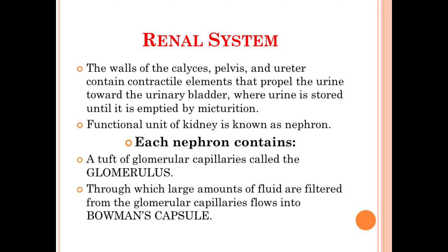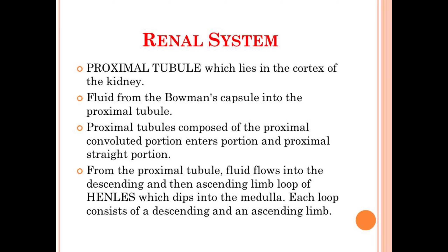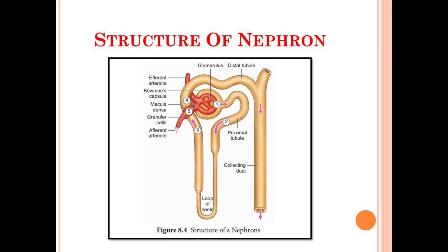Nephrons contain a tuft of glomerular capillaries known as the glomerulus. Through the glomerulus, a large amount of fluid flows into the Bowman's capsule. The proximal tubule lies in the cortex of the kidney, and the fluid from Bowman's capsule flows into the proximal tubule. The proximal tubule is composed of two portions: the proximal convoluted portion and the proximal straight portion. From the proximal tubule, the fluid flows into the descending and ascending limbs of the loop of Henle, which dips into the medulla. Each loop consists of an ascending and a descending limb.